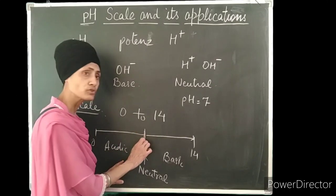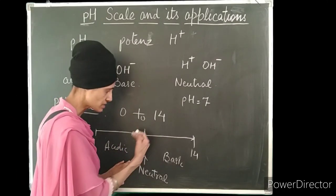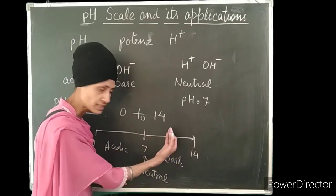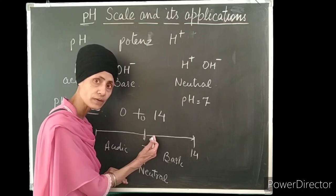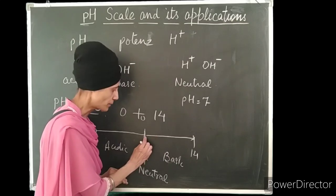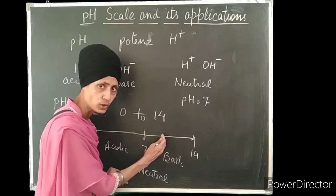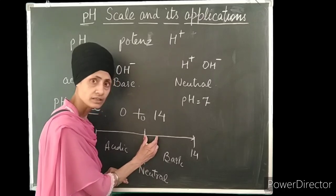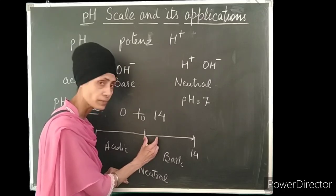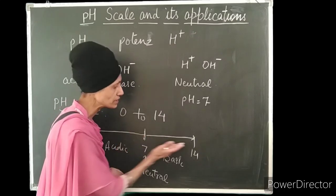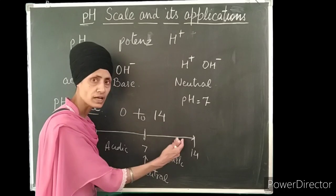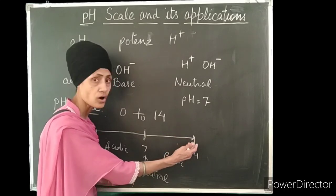At 7 we have neutral solution, and as the pH value increases above 7 the solution becomes basic. Up till pH 8 or 9, the base has less basic strength, it's a weak base. When the pH value further increases up till 14, near 14 means after 12, 13, 14 there are strong bases.